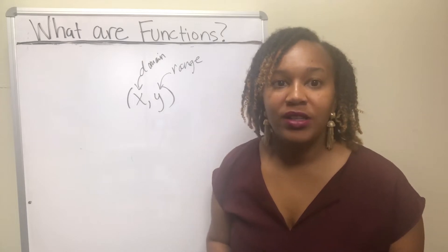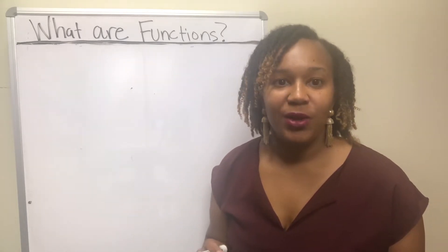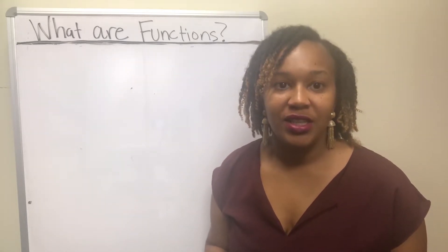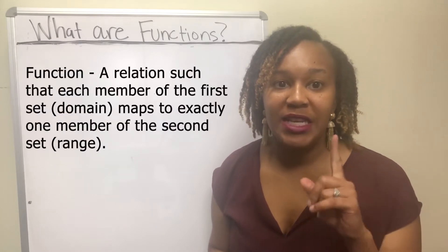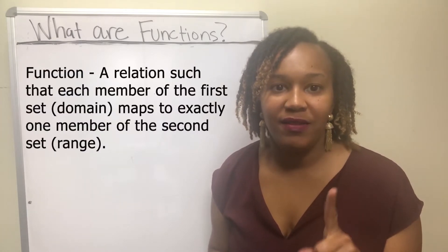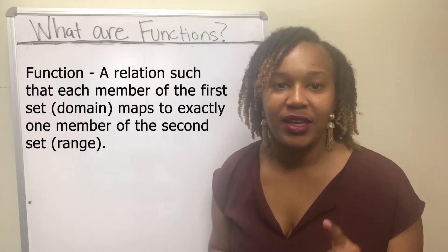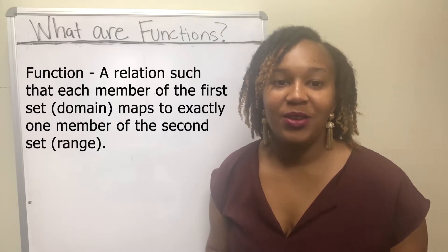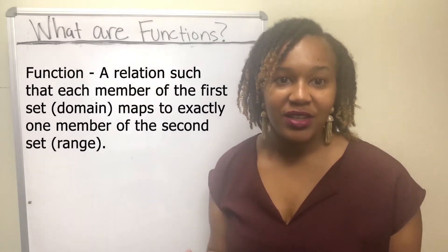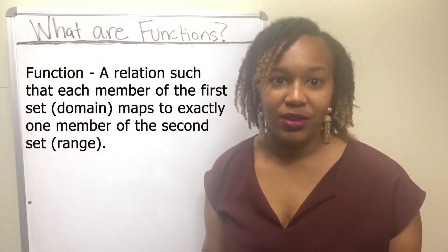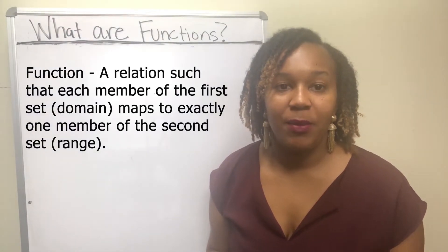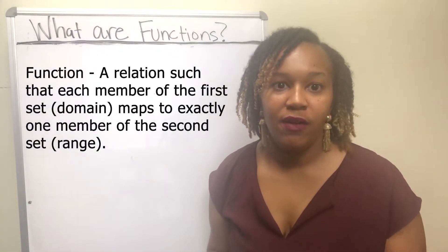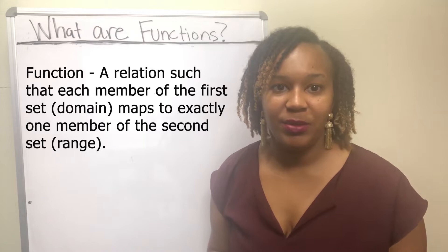So what is a function? A function is a relation such that each element of the first set, the domain, maps to exactly one element of the second set, the range. So you have a collection of ordered pairs — a relation — and each of your first elements can map to only one of your second elements.